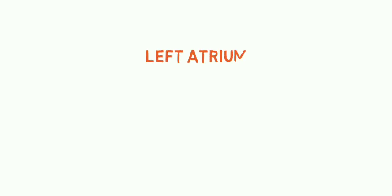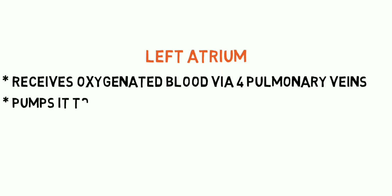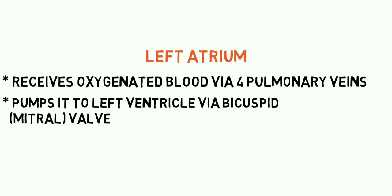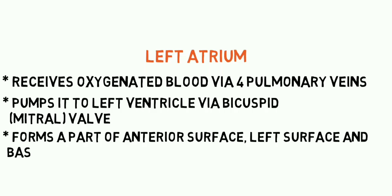Now let's see about the left atrium. The left atrium receives oxygenated blood from the lungs via four pulmonary veins, which drain on the posterior surface. It then pumps the blood into the left ventricle via the bicuspid valve, also known as the mitral valve. The left atrium forms a part of the anterior surface, left surface, and base of the heart.